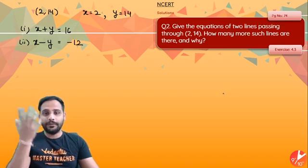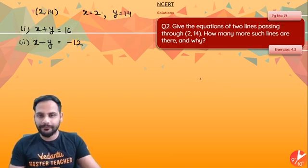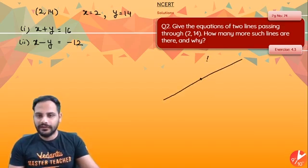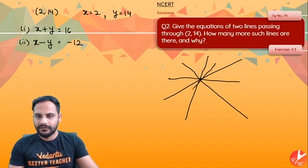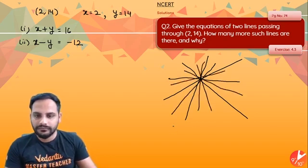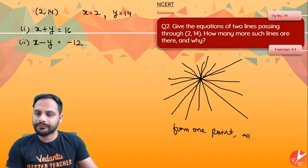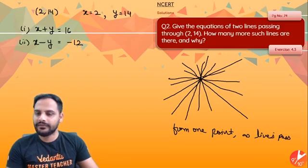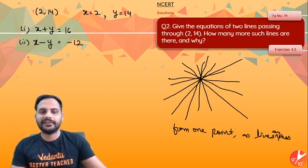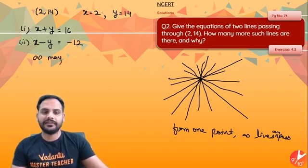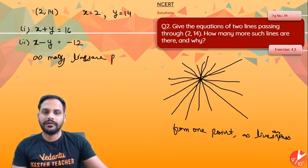Now the question is saying how many more such lines are there? If you will see, let's say this is the point 2 comma 14. So one line is passing through like this, other line is passing through this point like this, other line is passing through point like this, this, this, this. So this way I can draw infinite lines passing through this point. So we know from one point infinite lines can pass. So how many such lines are possible? Infinitely many lines are possible.